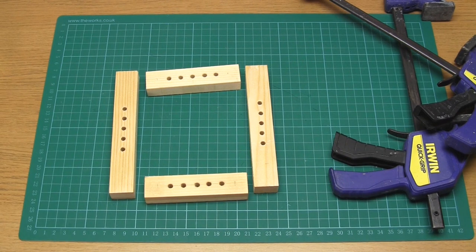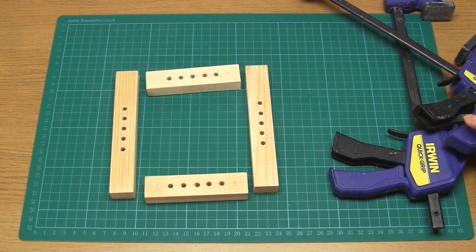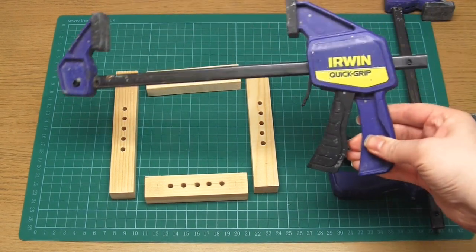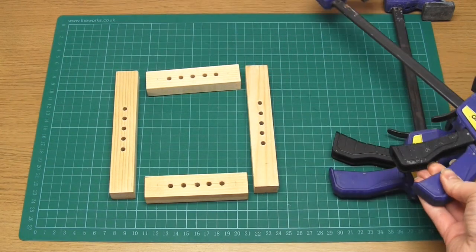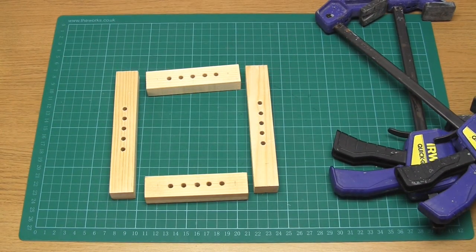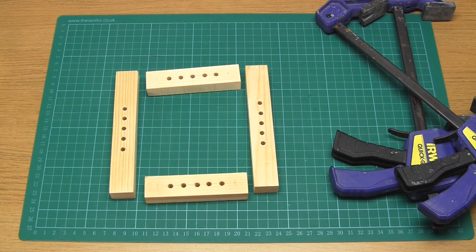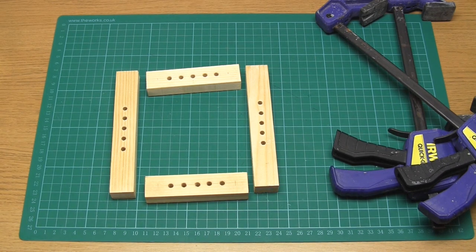I decided to make my own frame from scrap wood but you could just drill holes in a picture frame instead. If you'd like to avoid drilling holes completely then you can always use the method that I showed in my previous video where I basically just taped the cane to the frame.